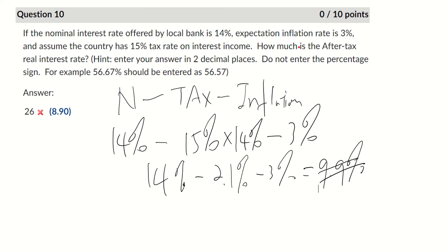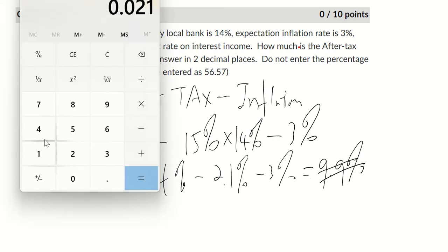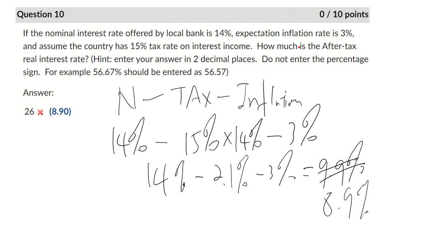Let me double check. So 14 minus 2.1, and then minus 3%. All right. So 8.9%, so I was right. So again, use our nominal interest rate, 14%, minus the tax rate. So tax rate is the 15% of your 14%. And then minus inflation, which is 3%. And that will be our after-tax real interest rate.